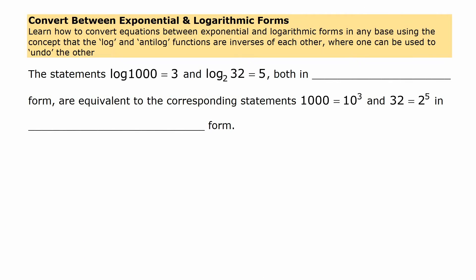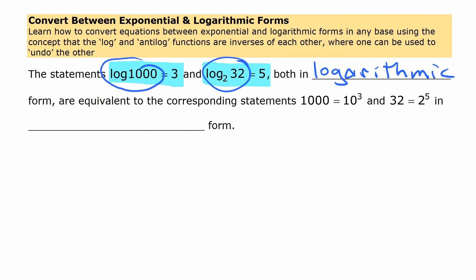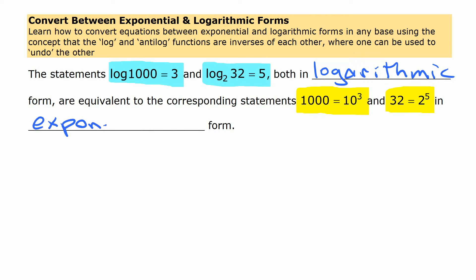Expressions like log of a thousand is three, or log base two of thirty-two is five, are said to be in logarithmic form because they use logarithms. They're equivalent to these other expressions: a thousand is ten to the third, or thirty-two is two to the fifth. Those are said to be in exponential form because they involve exponents.